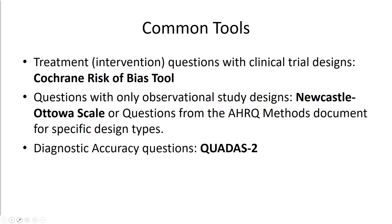Here are the common tools. For treatment or intervention questions, you have the Cochrane Risk of Bias tool. I'm going to show you the previous version — Cochrane Risk of Bias 1.0 — simply because for when you're learning, it's a simpler entry into what is actually a pretty complicated field. When you have only observational study designs, there's the Newcastle-Ottawa Scale. And for diagnostic accuracy questions, there's QUADAS-2.